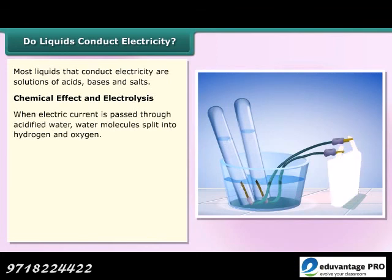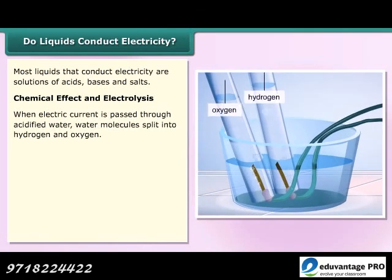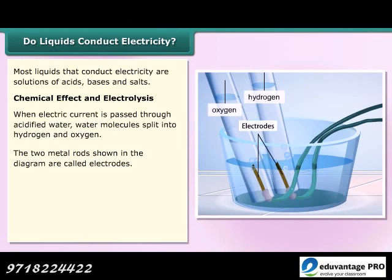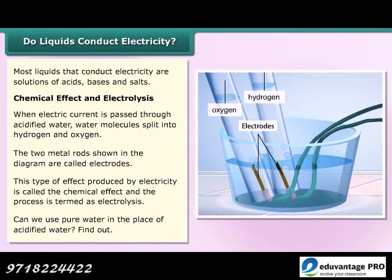Chemical effect and electrolysis: When electric current is passed through acidified water, water molecules split into hydrogen and oxygen. The two metal rods shown in the diagram are called electrodes. This type of effect produced by electricity is called the chemical effect and the process is termed electrolysis. Can we use pure water in the place of acidified water? Find out.